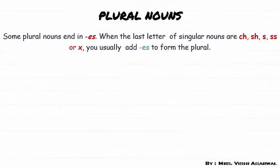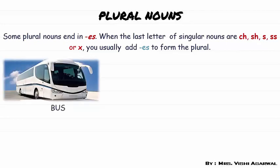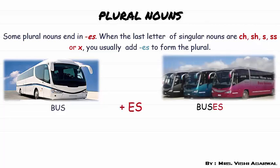Some plural nouns end in ES. We add ES when the last letter of the singular noun is CH, SH, S, SS, or X. For example, bus — the last letter is S — so what we will do to make it plural? We add ES at the end of the word.